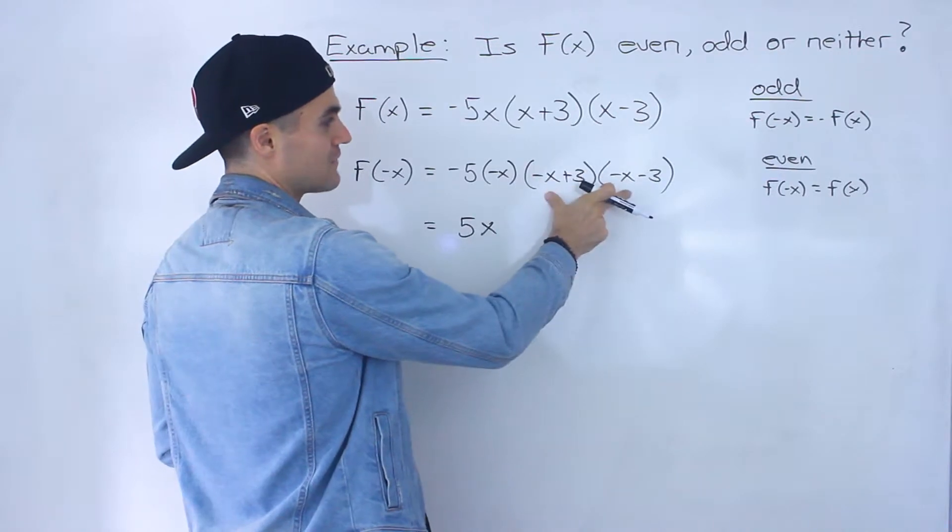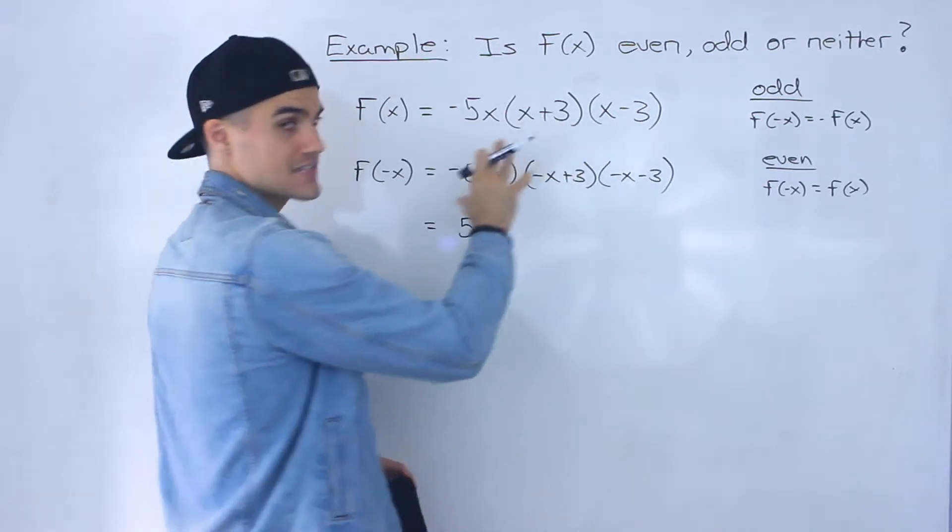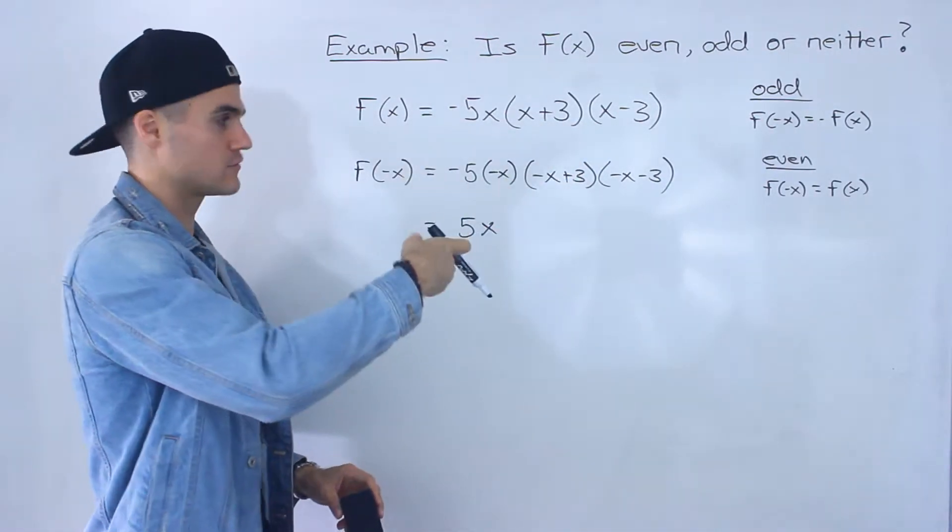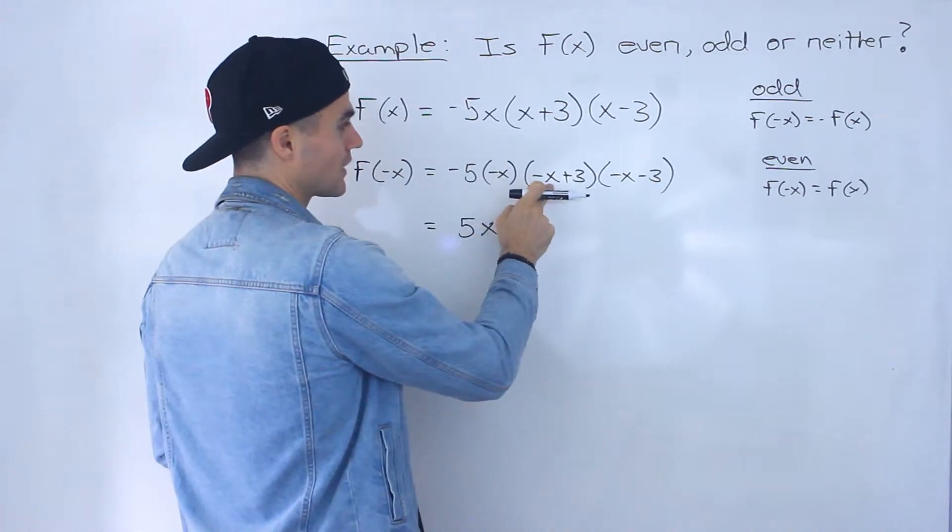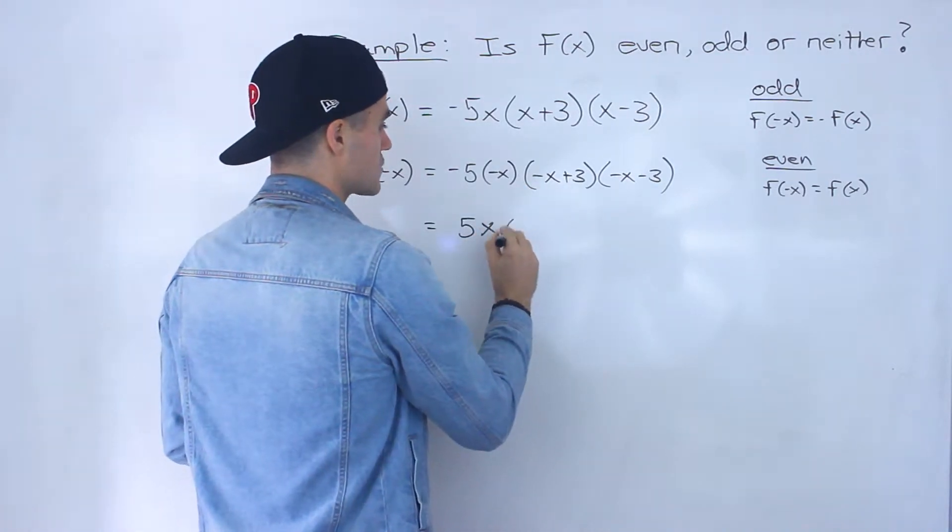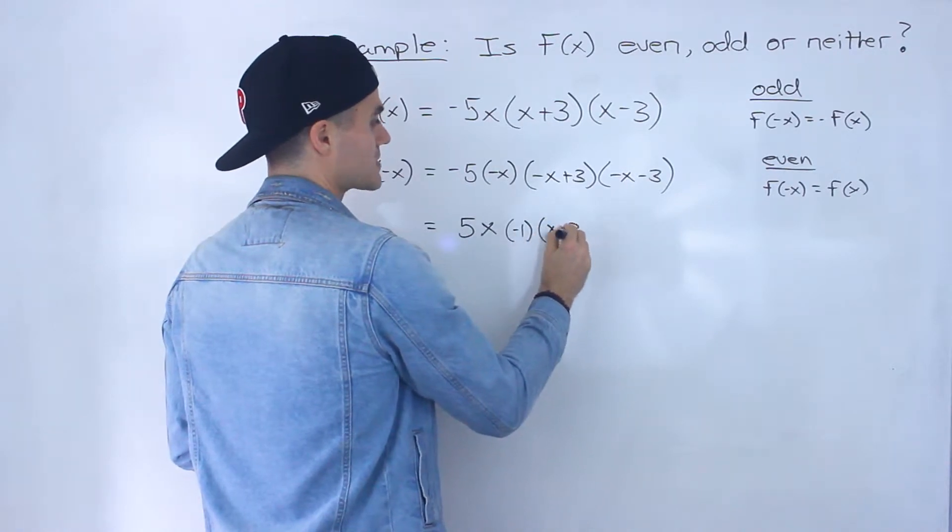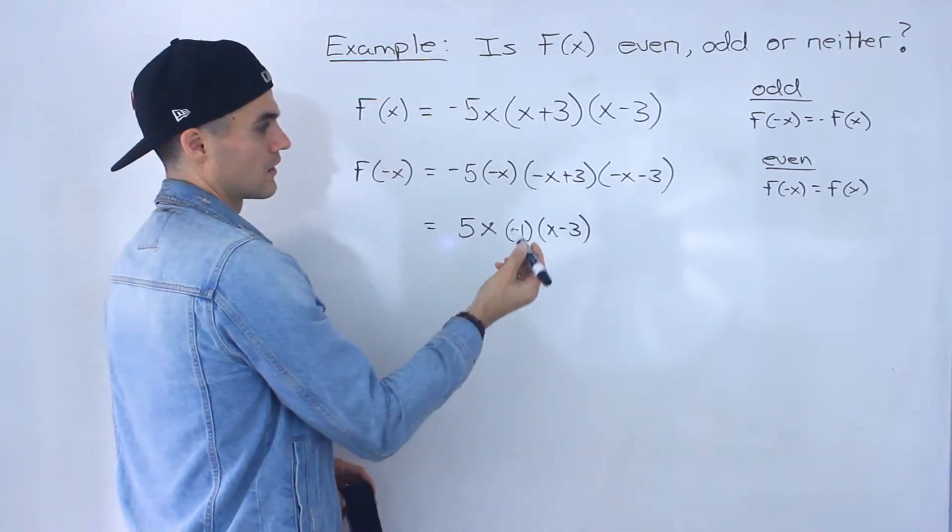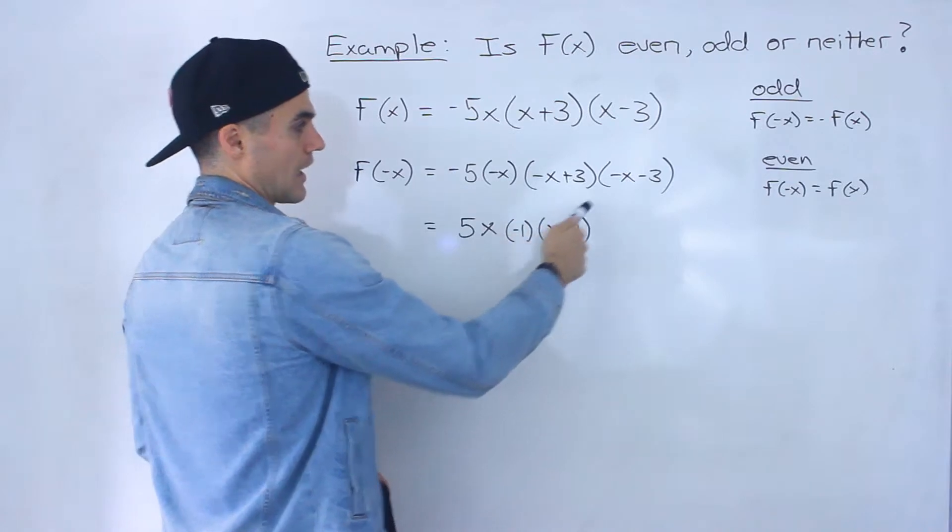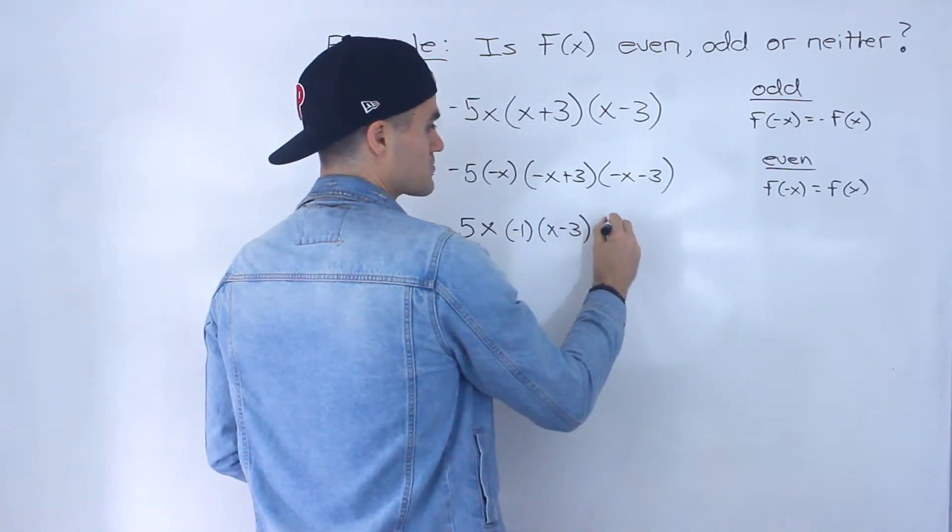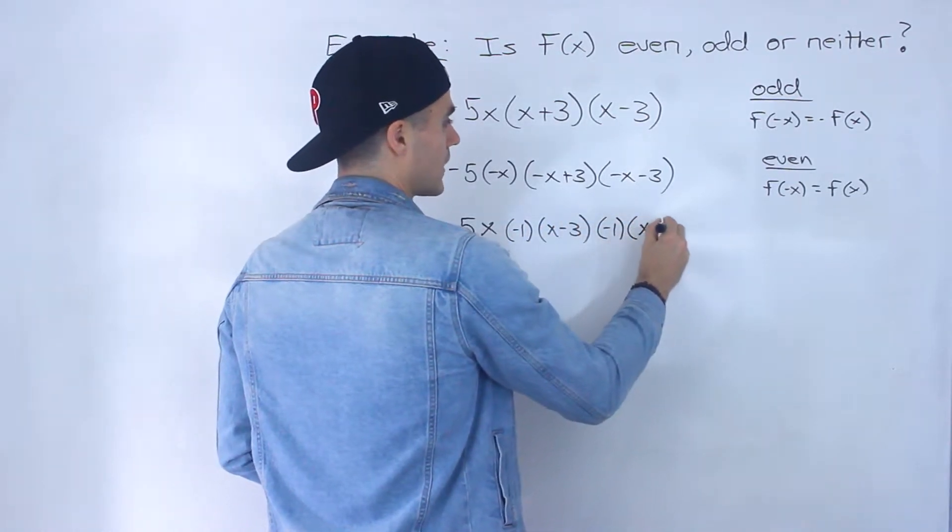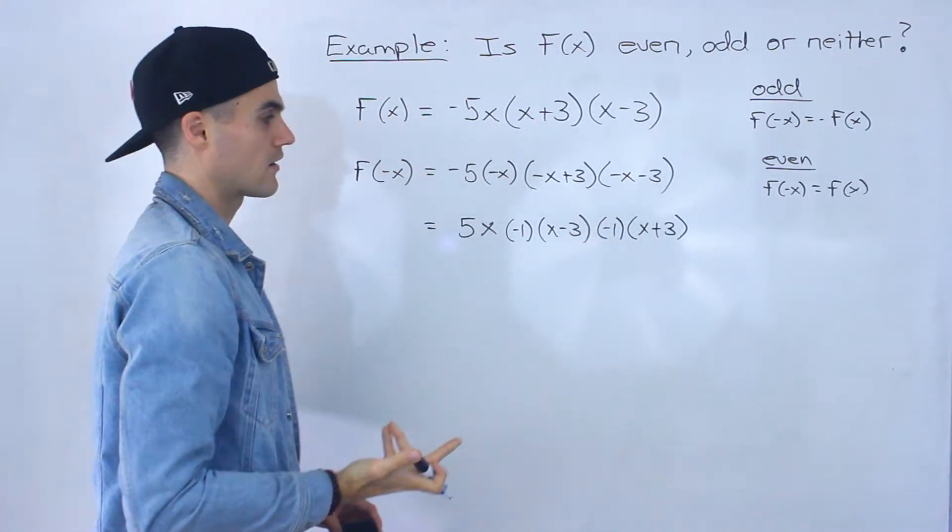You want to get the x value to be in the same format as the original function, having a positive leading coefficient. So I'm going to factor out a negative 1 here—if I factor out a negative 1 from this bracket, I'll end up with x minus 3, all the signs will change. Then if I factor out a negative 1 from this bracket, this would become x plus 3, all the signs will change there.